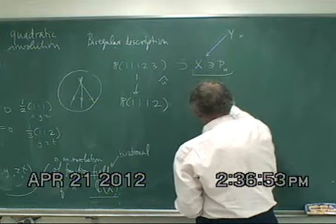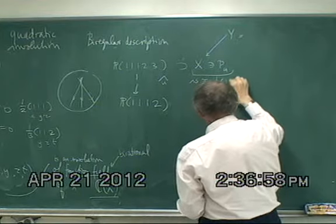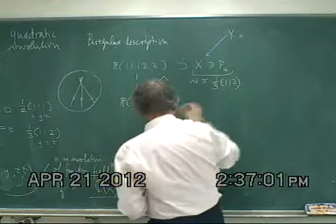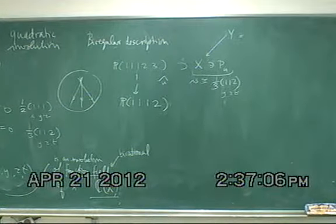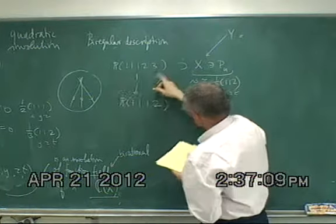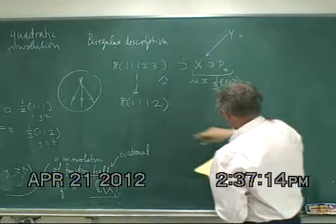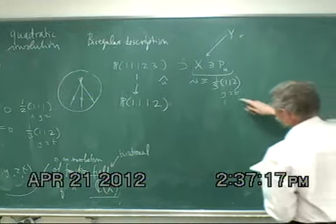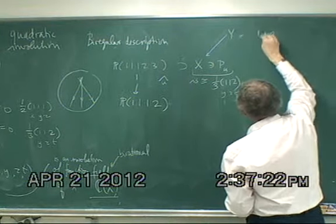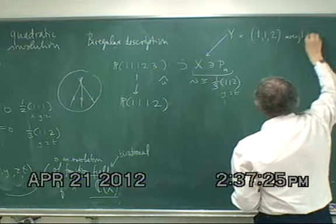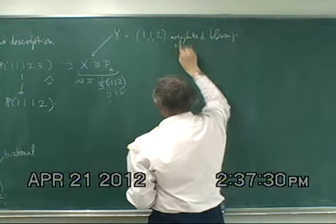The point P_u is isomorphic to (1/3)(1,1,2), with y, z, and t as coordinates. As far as the whole weighted projective space is concerned, it's P(1,1,1,2). So X is the (1,1,2)-weighted blow-up of this point.